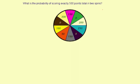What is the probability of scoring exactly 500 points total in two spins? Let's take a look at this spinner. First of all, there are 10 wedges, so I'll write a 10 here.